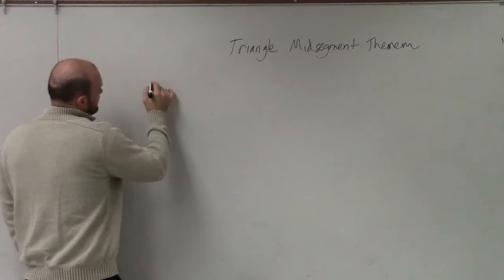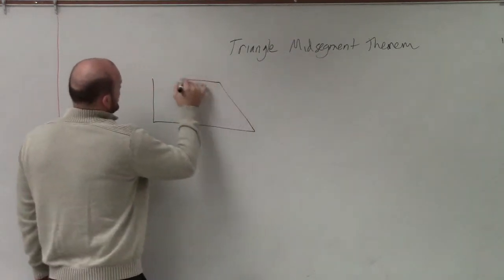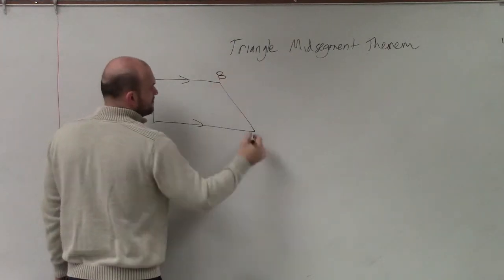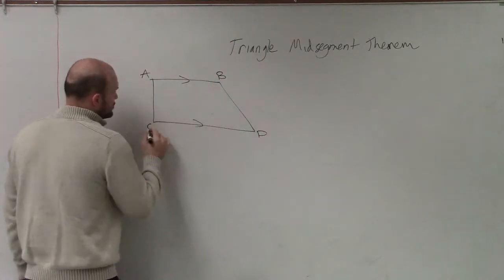So if you guys remember, we were looking at a trapezoid. We had parallel lines. And let's call this A, B, Devon, and Charles.